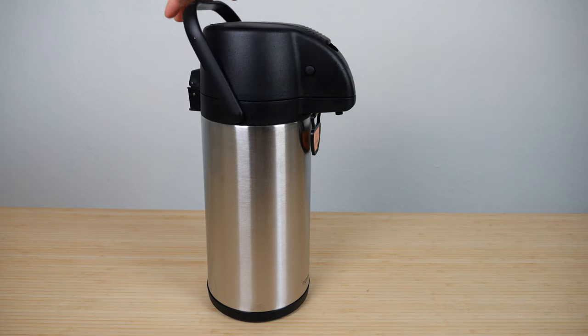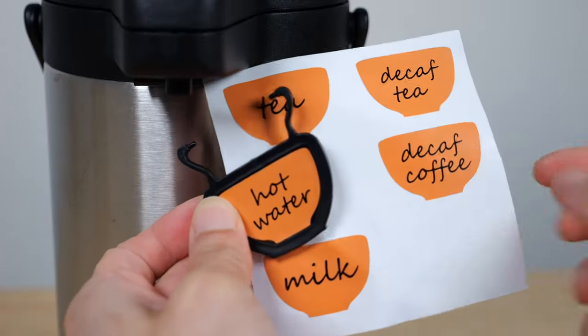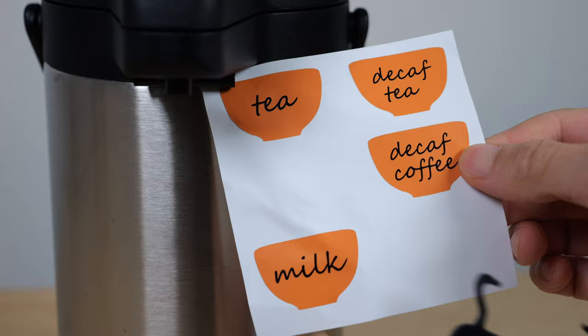It has the handle. It comes with this little tag so you can put it on and show what's inside. Tea, decaf tea, hot water. I put it on the other side. Coffee, decaf coffee, and milk.